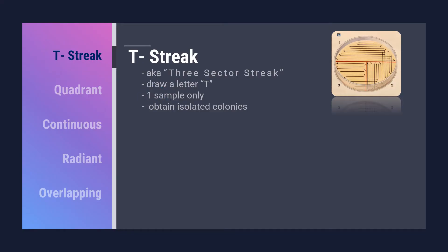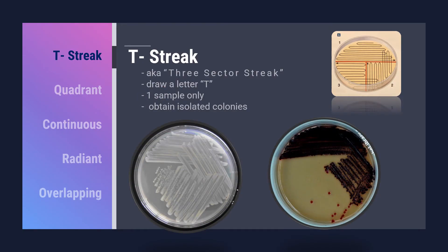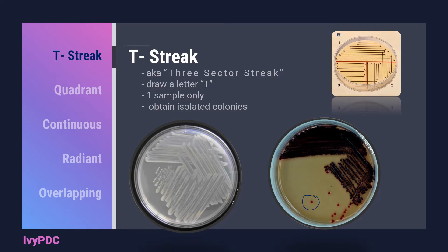One disadvantage of this streak is that we can only use one sample, as spreading more than two samples on the Petri dish would be difficult. The objective of this streaking pattern is to obtain isolated colonies. The subsequent dilution of the organism through the use of different loops dilutes the colonies and allows isolated colonies to form. This Petri dish does not give isolated colonies and subculture might be needed to provide isolated colonies.